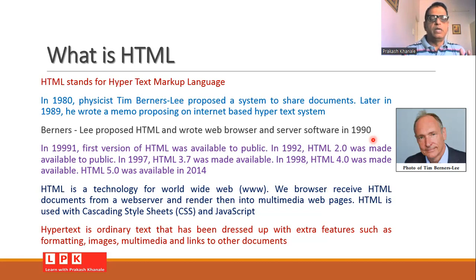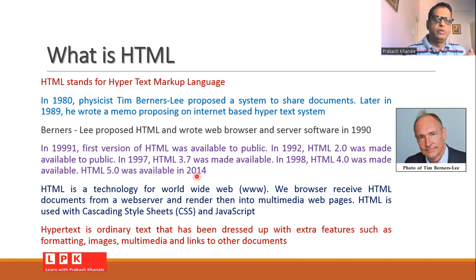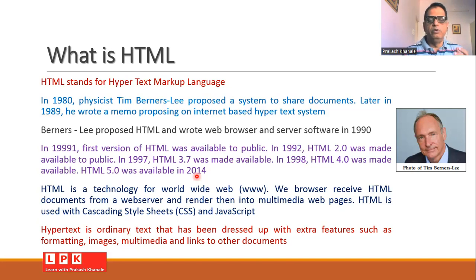Initially it was version 1.0, then version 2.0, then version 3 was available in 1997, then version 4.0, and recently we have HTML version 5.0. HTML is a kind of technology, and this technology is being used for the worldwide web, or in short, WWW.